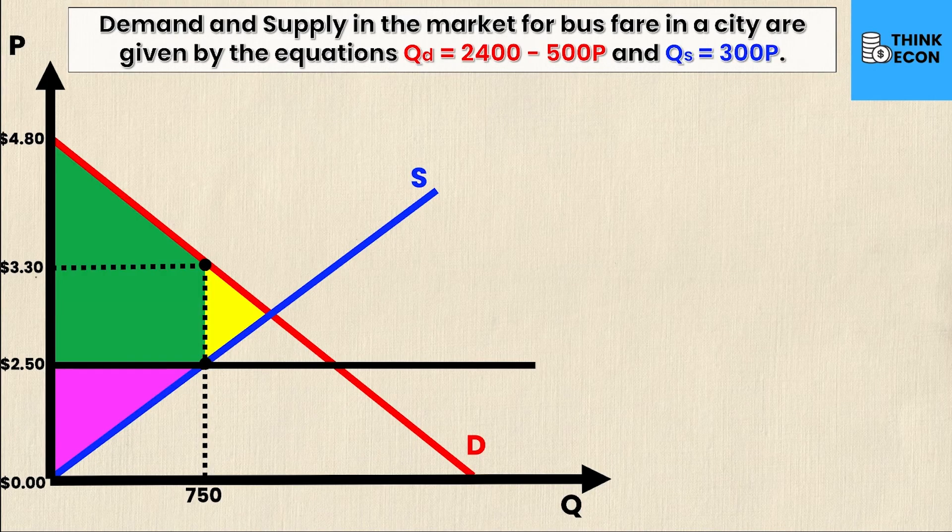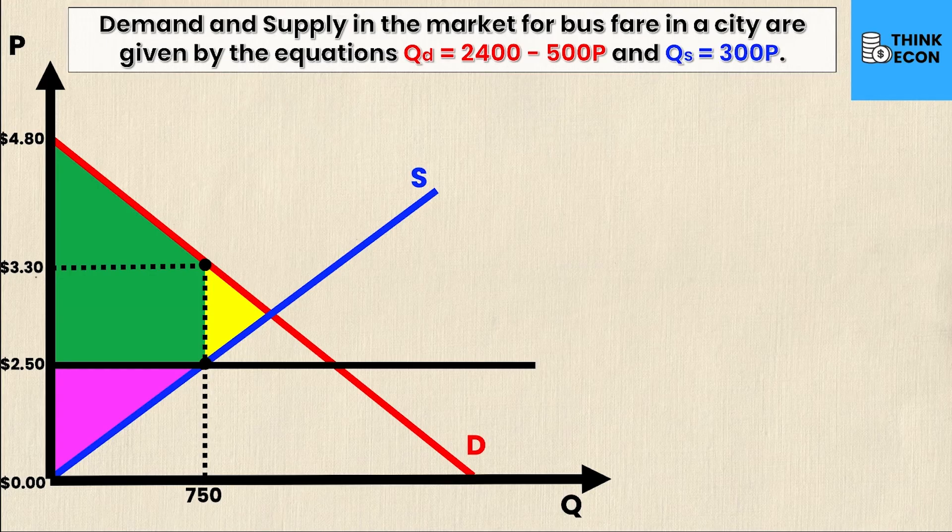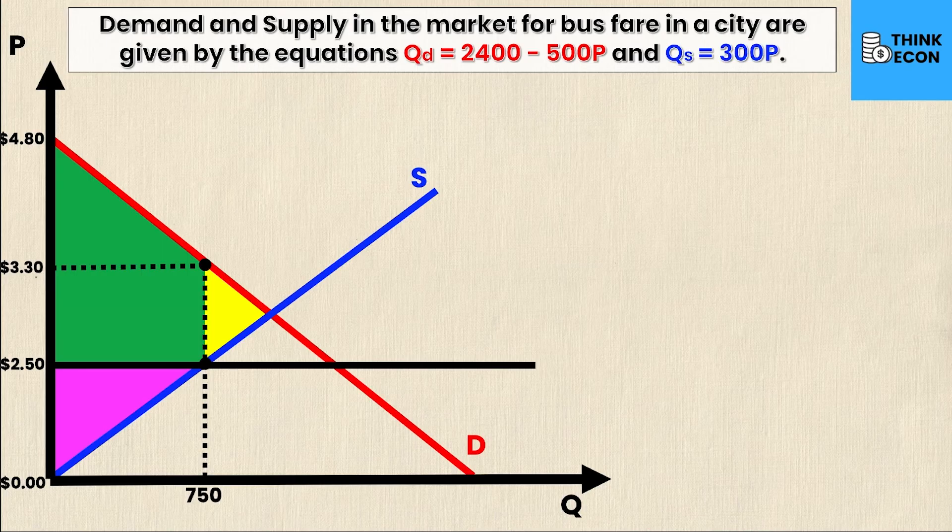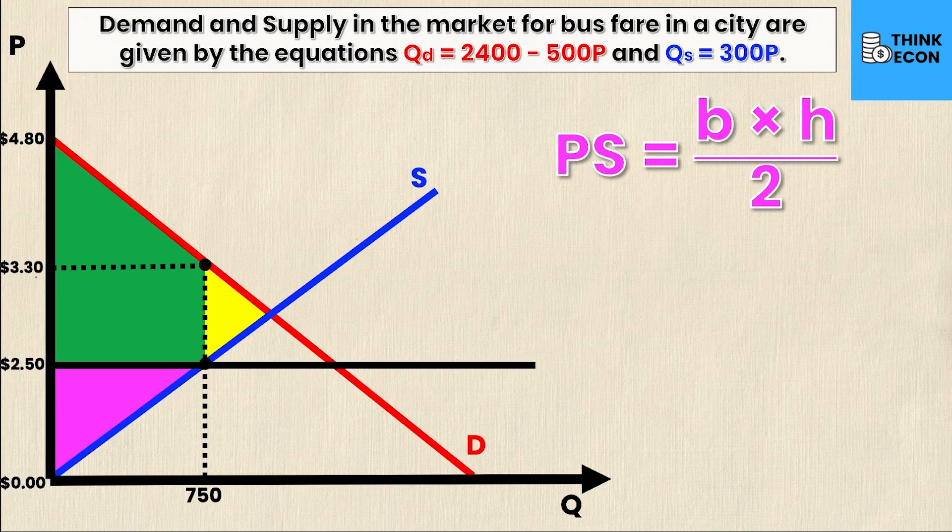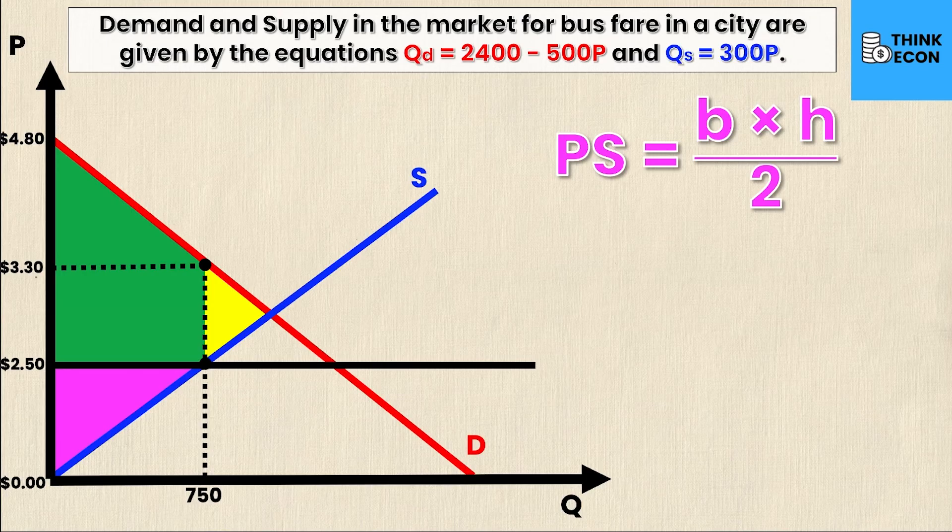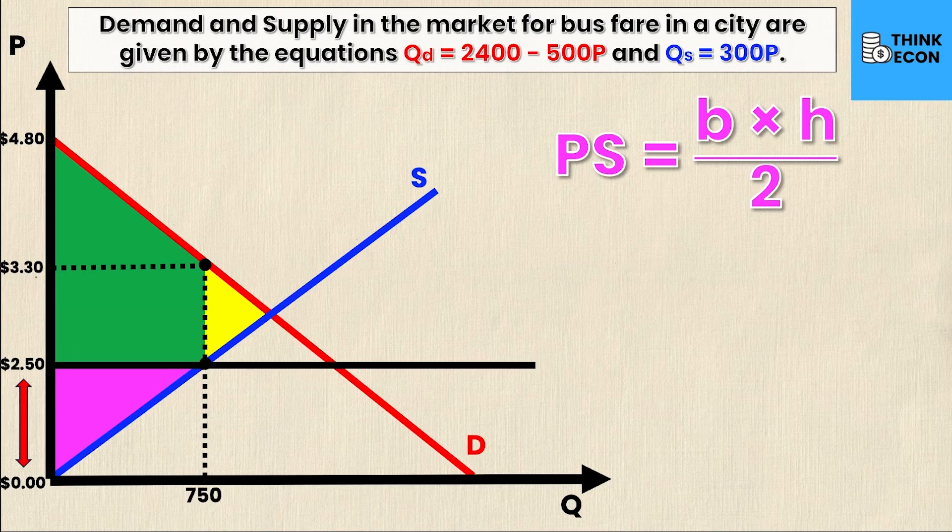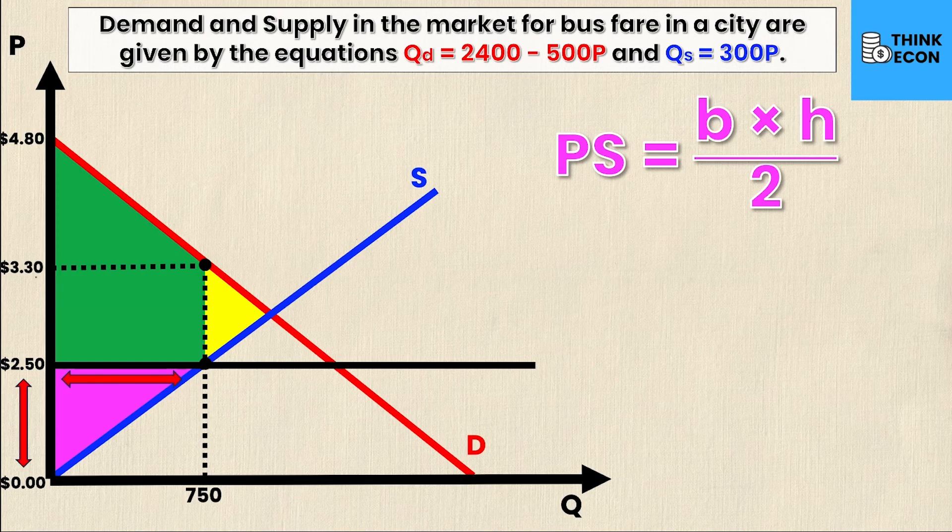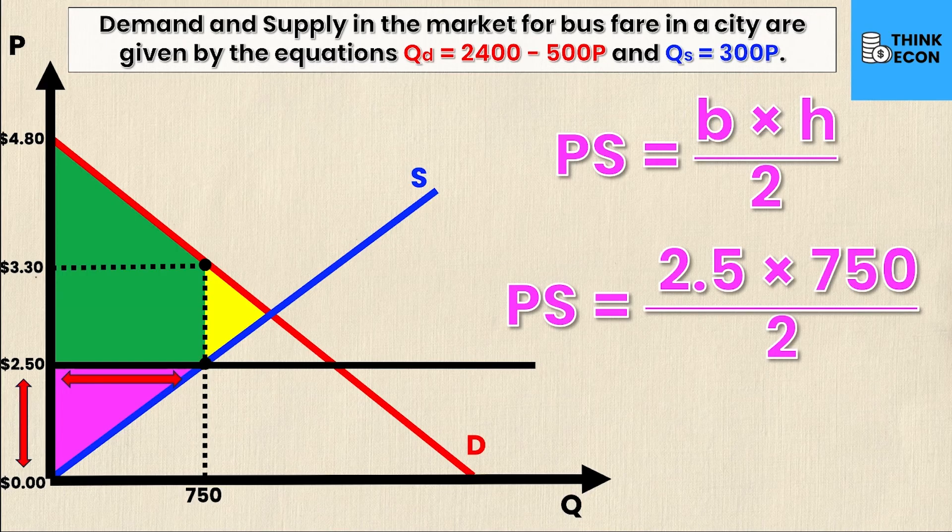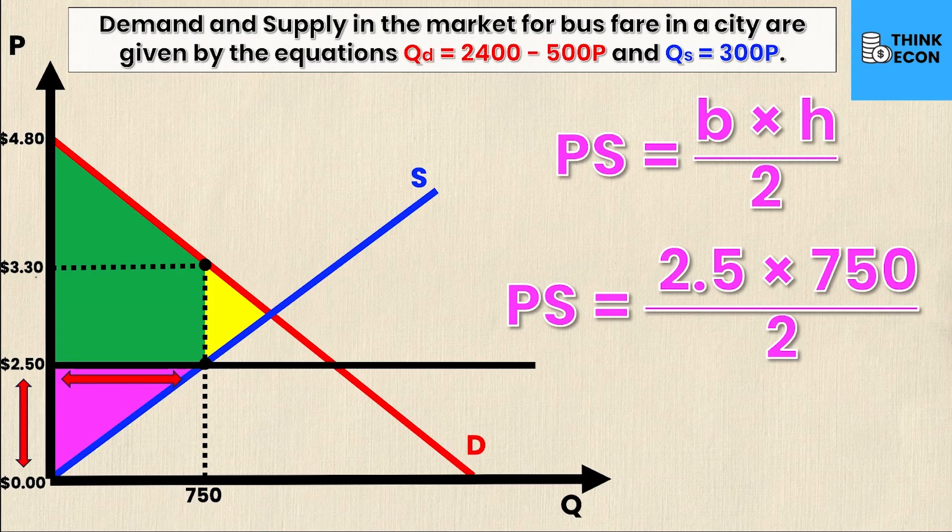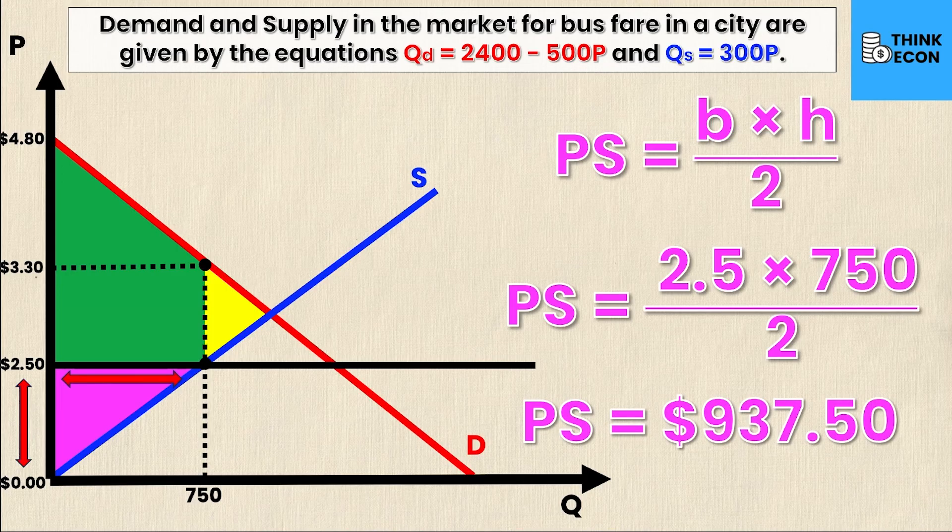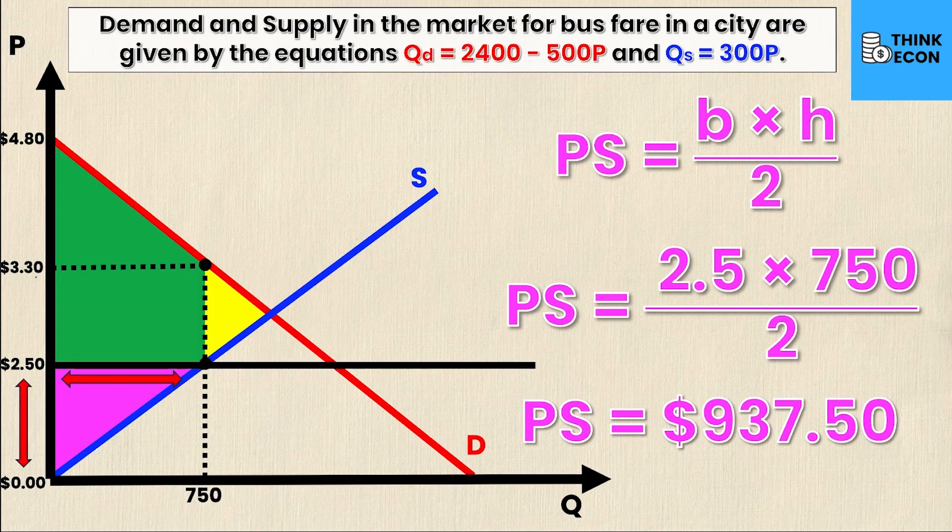Recall that producer surplus is the area below the selling price and above the supply curve, denoted by the pink triangle. Producer surplus equals base times height divided by two. The base is $2.50 and the height is 750. So producer surplus = (2.5 × 750) / 2, and producer surplus equals $937.50.